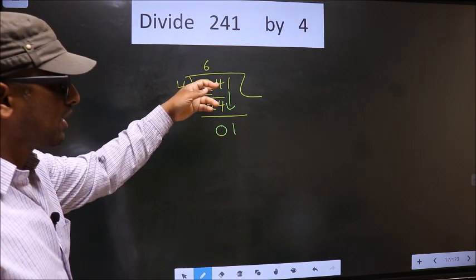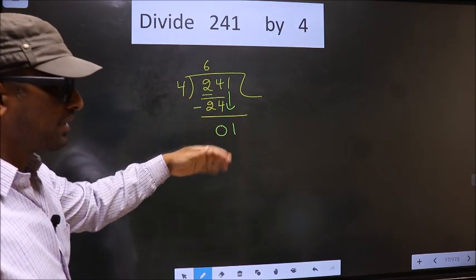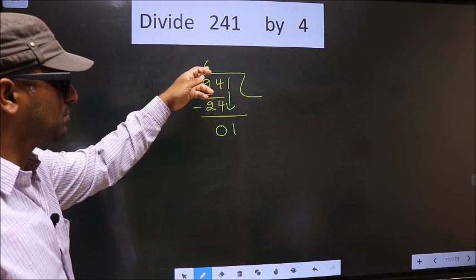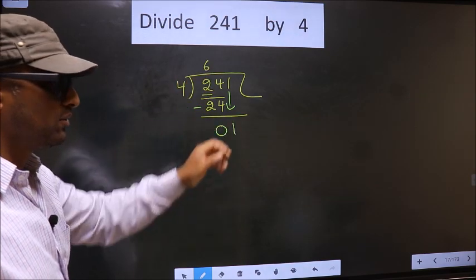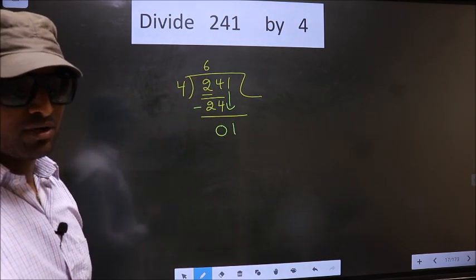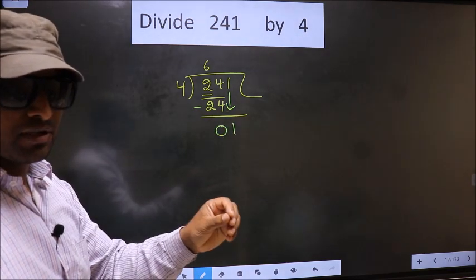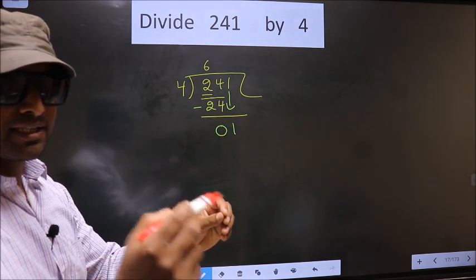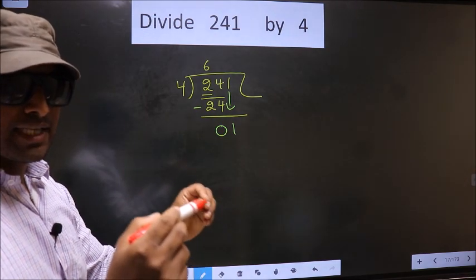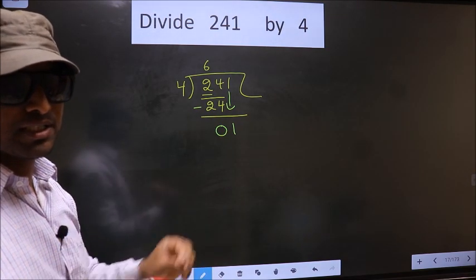Just now, you brought a number down. And in the same step, you want to put a dot and take 0. Which is wrong. I repeat. Bringing the number down and putting a dot and taking 0. Both at the same step. You are not supposed to do.